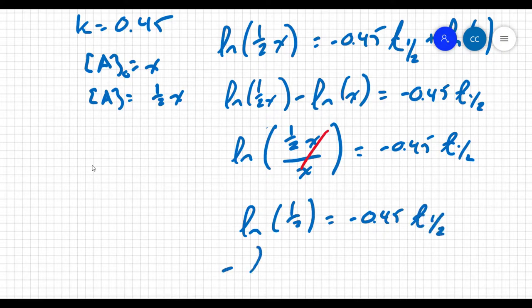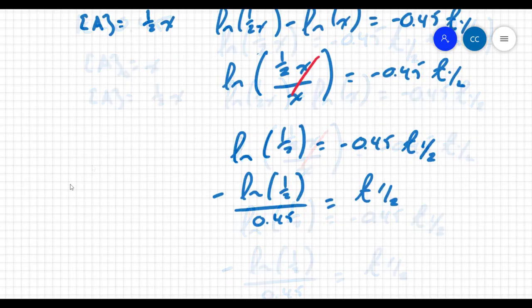So all I have here is that the natural log of one half equals negative 0.45 times my half life. Or the negative value of my natural log of one half all over 0.45 equals t1/2. That's the equation that we saw in that summary chart where it said that 0.693 over k is going to equal your half life. 0.693 is the negative natural log of one half.